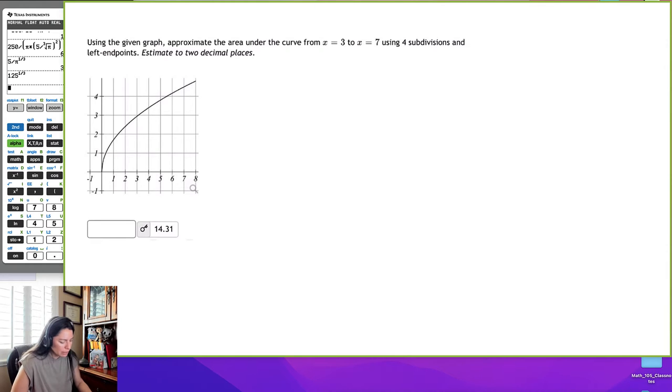So if we need to estimate from 3 to 7, this means that, let me block it out. I'm going to use a thicker pen. So from 3, let's make it a little thinner. There we go. 3 to 7, so there it is.